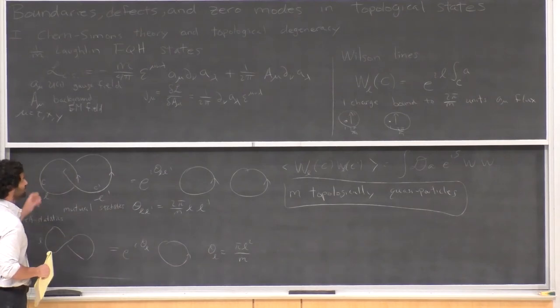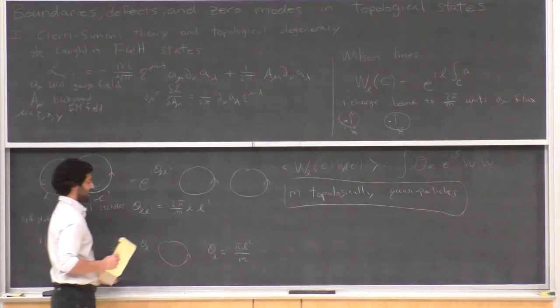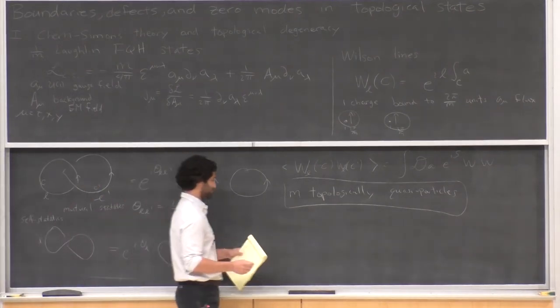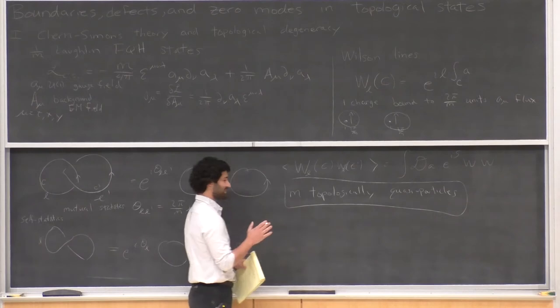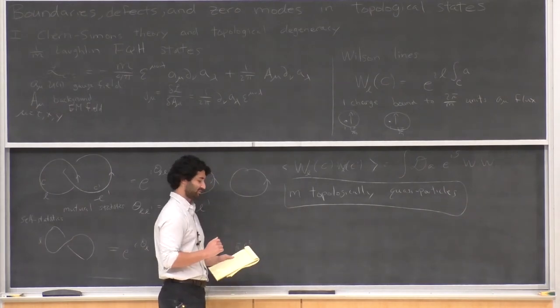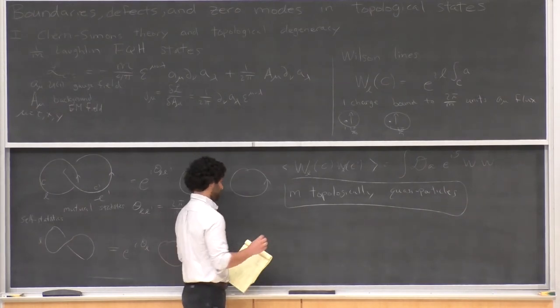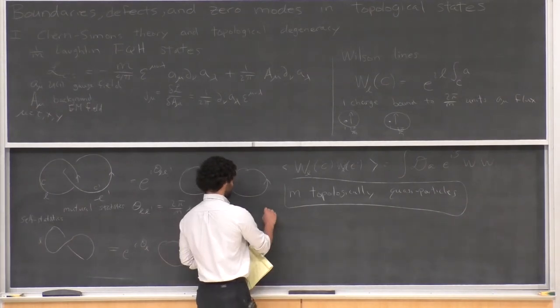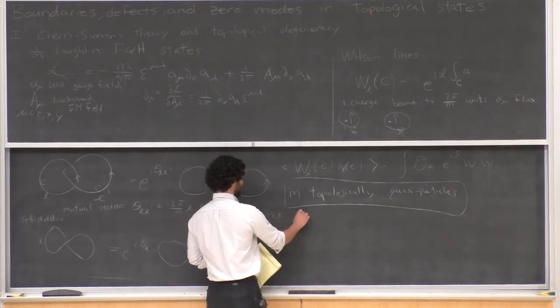This Chern-Simons theory has a peculiar feature. Let's look at the Hamiltonian. To do that, let's pick the gauge A_t = 0 — or rather, let's integrate out A_t.